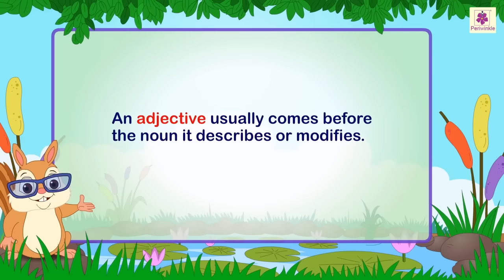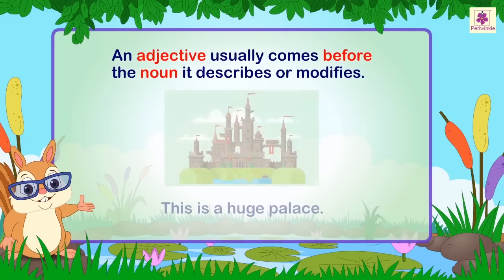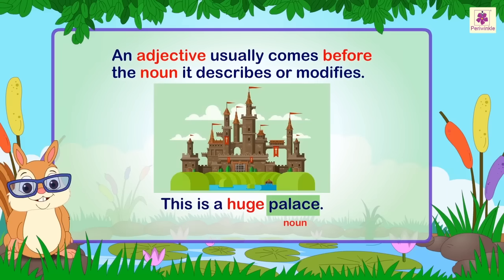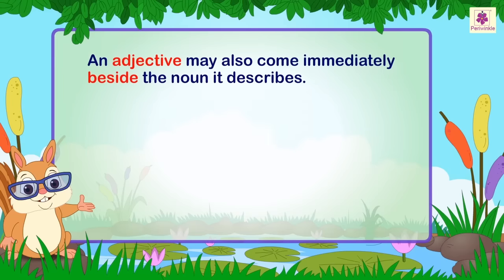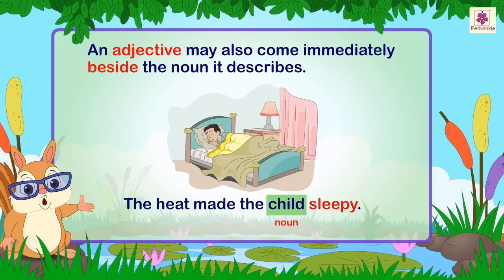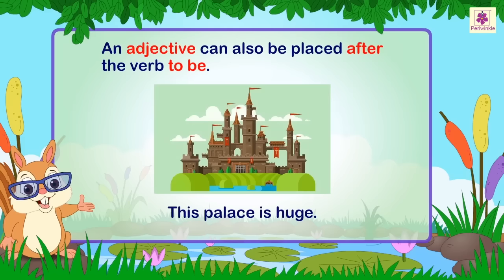An adjective usually comes before the noun it describes or modifies. For example: this is a huge palace. An adjective may also come immediately beside the noun it describes. For example: the heat made the child sleepy. An adjective can also be placed after the verb 'to be.' For example: this palace is huge.